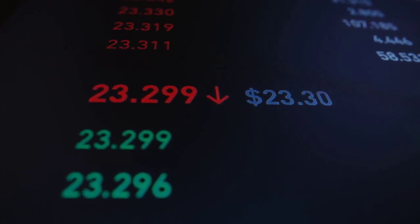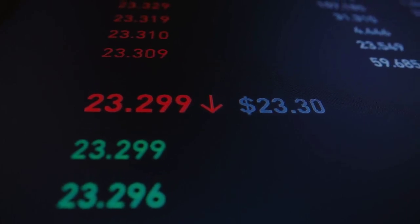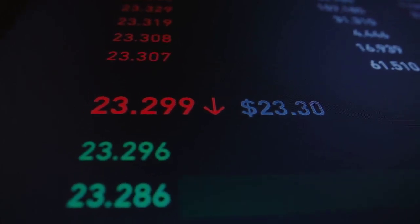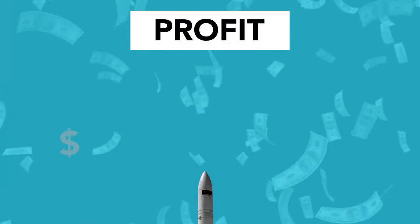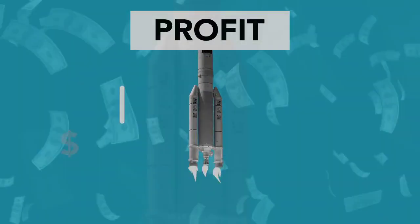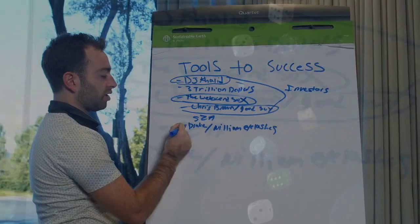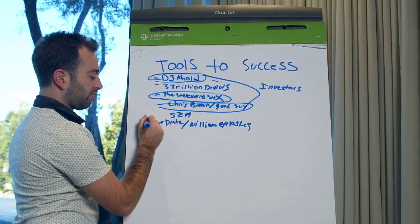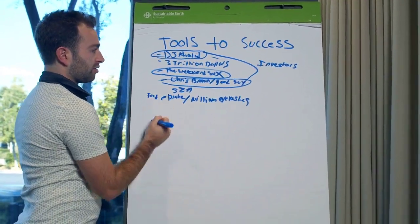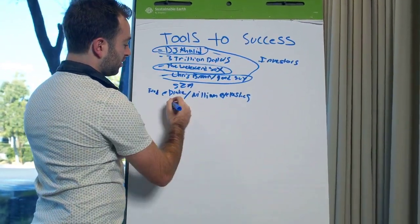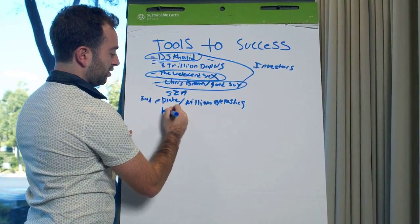Monitor competition. Keep an eye on your competitors' activities. Adjust your budget if needed to stay competitive in your industry. Invest in training. Allocate resources for staff training or hiring experts to ensure your team is equipped to handle various aspects of digital marketing.